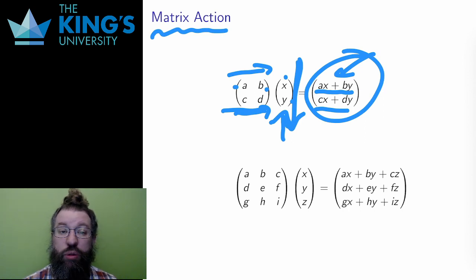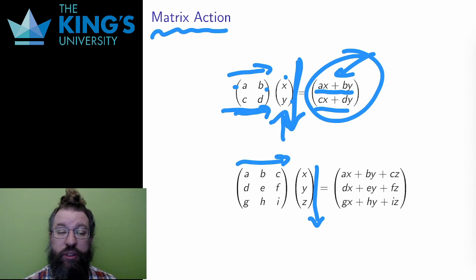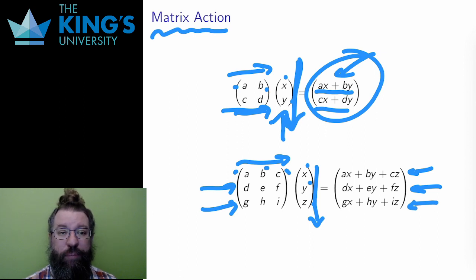The result is a new two-component vector, where each component came from a row of the original matrix. The same is true in R3 with a matrix acting on a three-dimensional vector. For each component, I go across the row of the matrix and then down the vector, multiplying and adding. The first component is ax plus by plus cz, the second is dx plus ey plus fz, and the third is gx plus hy plus iz.